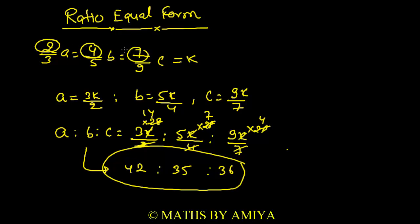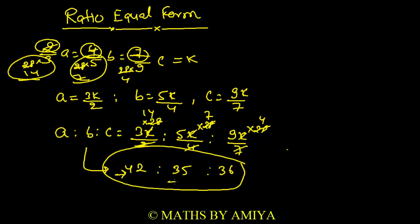For 2/3 A = 4/5 B = 7/9 C, we take the LCM of numerators 2, 4, 7 which is 28, and multiply in the denominator. That gives denominators 14, 7, and 4. So the ratio of A : B : C becomes 42 : 35 : 36. If you have equal form, take the LCM of numerators, multiply in the denominator — the resulting denominators give your integral ratio form.